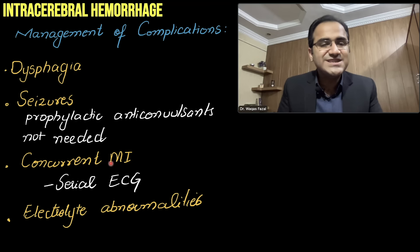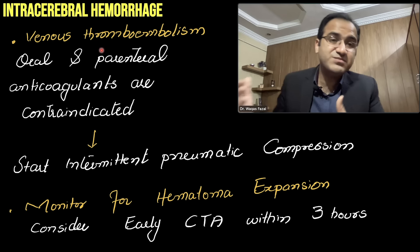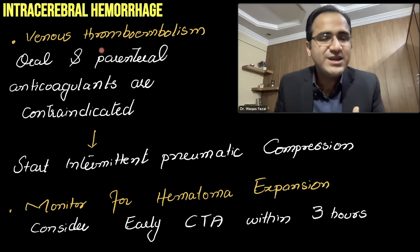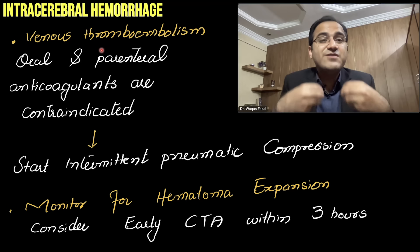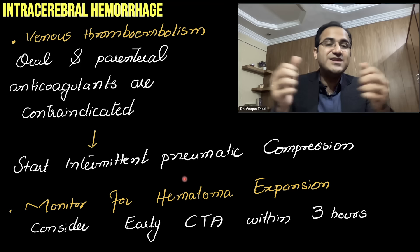If there is a concurrent MI, perform serial ECGs. Correct electrolyte abnormalities such as hypokalemia or hyperkalemia. For venous thromboembolism prevention: these patients are at high risk because they are immobile, but you cannot give anticoagulants due to the existing brain bleed. Instead, use intermittent pneumatic compression, which compresses the legs and keeps the paralyzed limbs moving to prevent blood stasis and DVT.